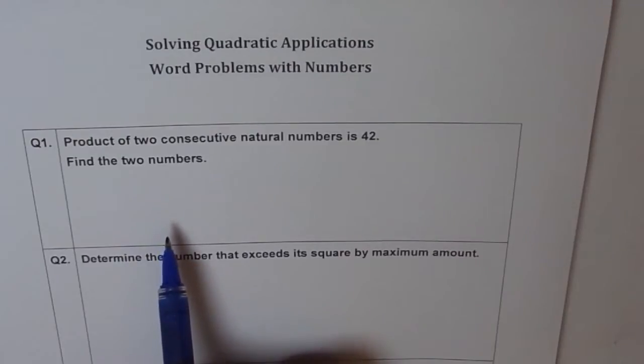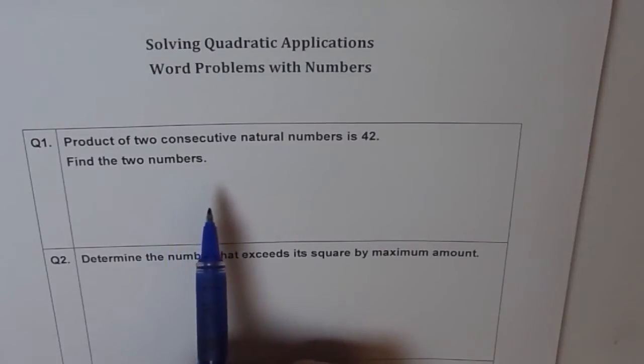So if one number is x, then what is going to be the next consecutive number? Well, consecutive numbers are numbers which come together. For example, 6 and 7, 8 and 9, like that. So the numbers which come together could be 5 and 6, 20 and 21. So if one number is x, then the other number will be x plus 1.